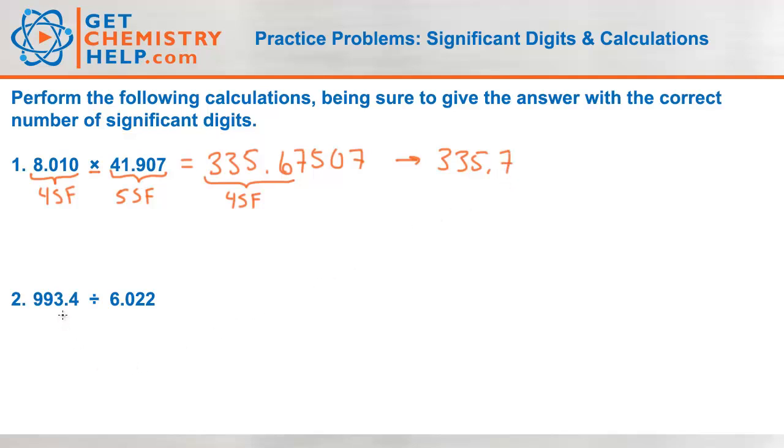How about the next one? 993.4 divided by 6.022. If we're doing division, it's fewest significant figures. My calculator tells me 164.9618. This has four sig figs. 6.022 has four sig figs. So my answer here can't have seven. It can only have the fewest, which is four sig figs.